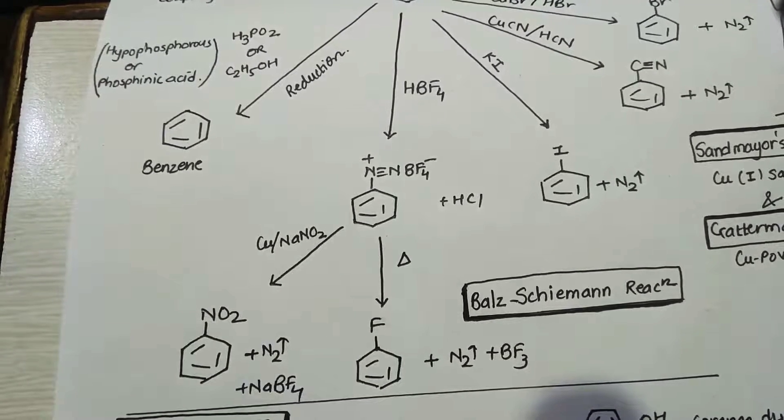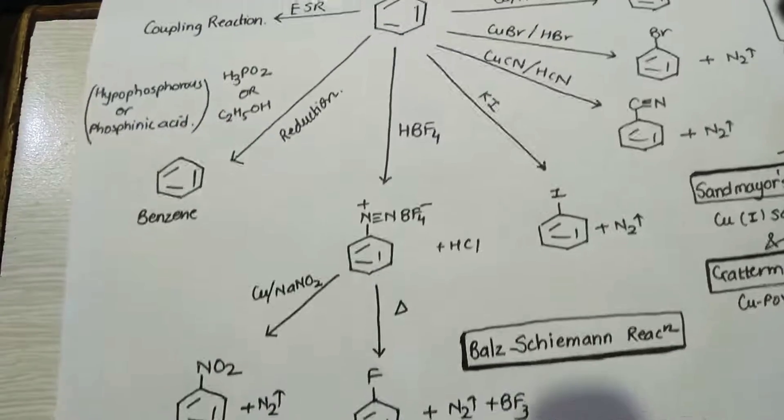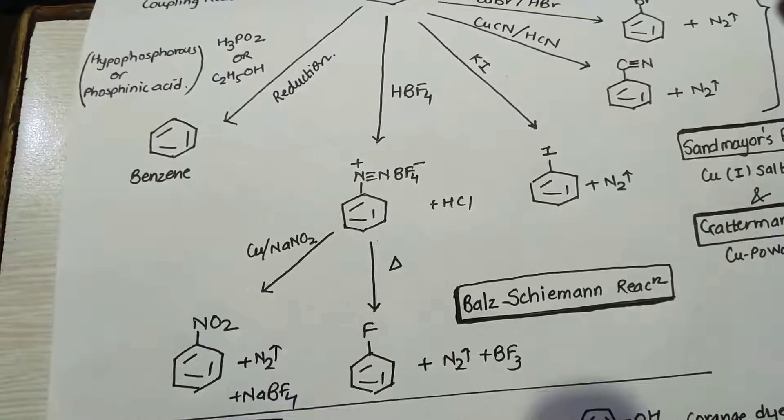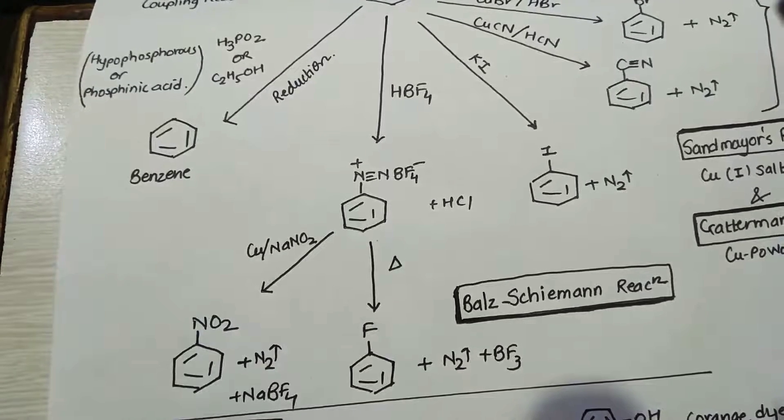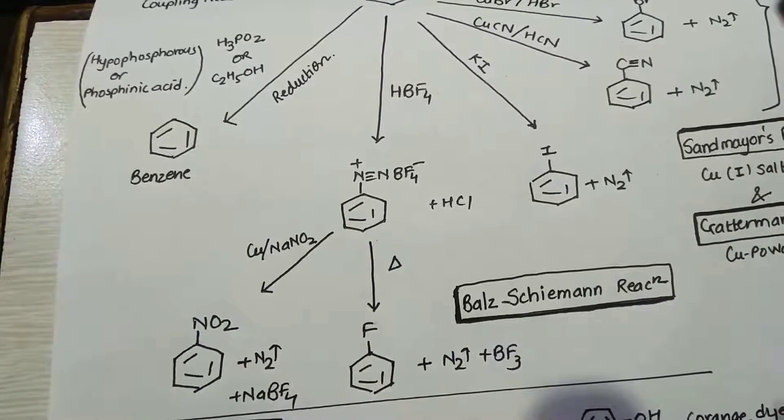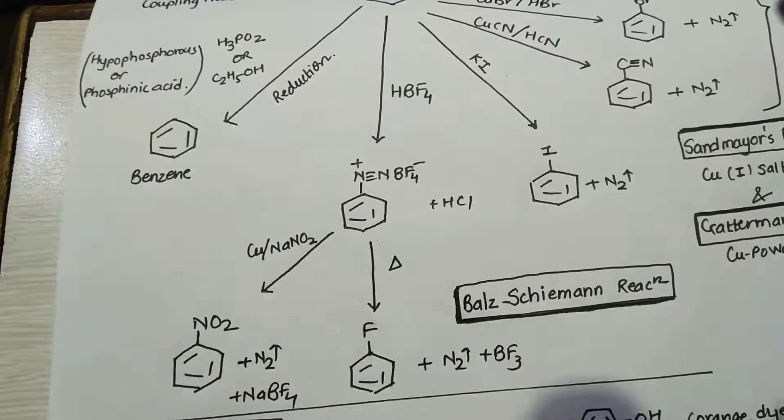Or if we treat fluoroborate with NaNO2, that is sodium nitrite, it will give you nitrobenzene. Okay, so aromatic fluoride, aryl fluoride, is made from Balz-Schiemann. At the same time, it's an important point to be noted that alkyl fluoride is made using Swartz reaction, and alkyl iodide is made using Finkelstein reaction. So you can also revise Finkelstein, Swartz, and Balz-Schiemann, and please understand the difference between all the three.